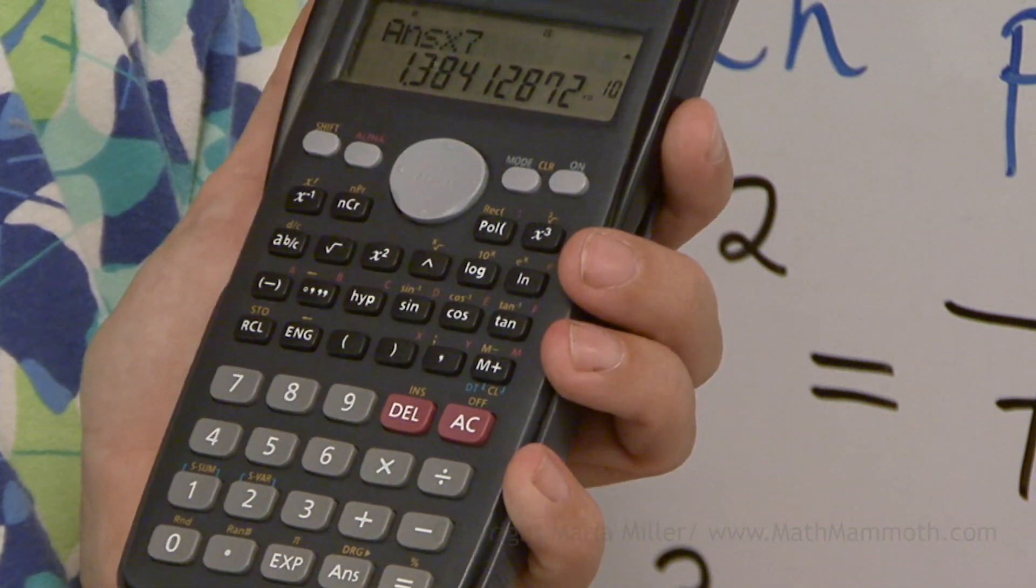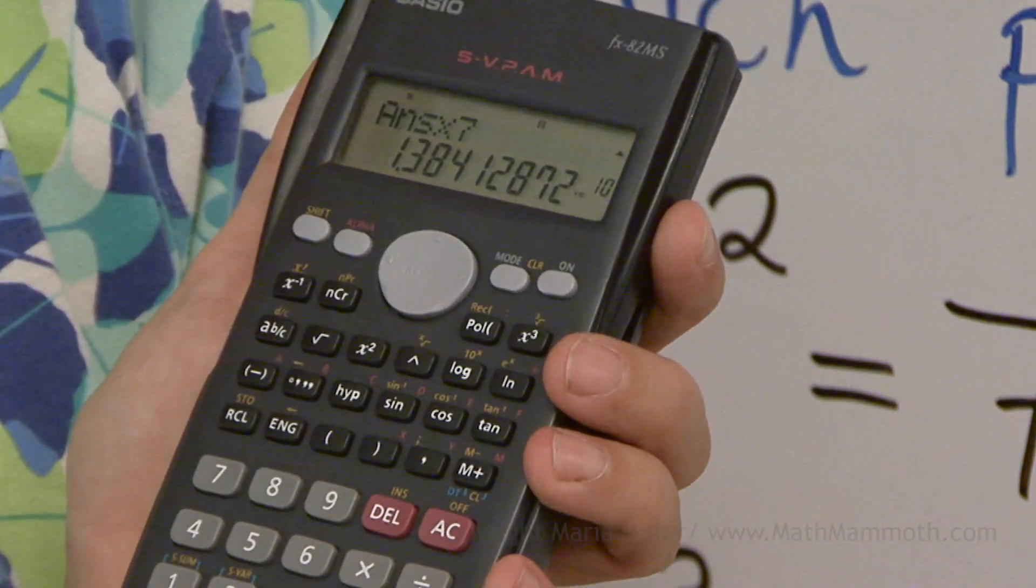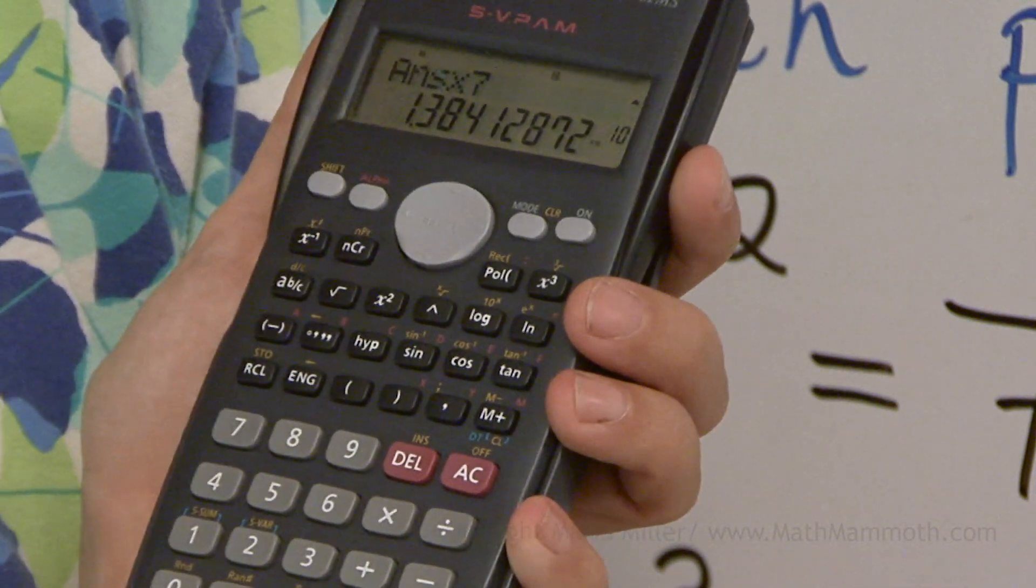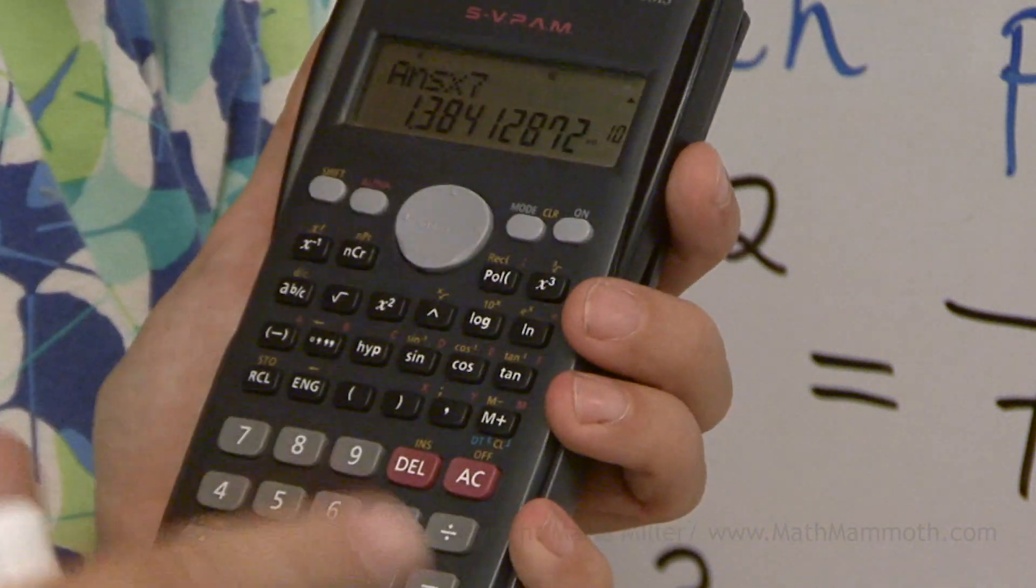And now it jumps to showing the answer with the power of 10. It is scientific notation, so to speak, which you don't have to study in fifth grade yet. But it is basically this decimal number times 10 to the 10th power.